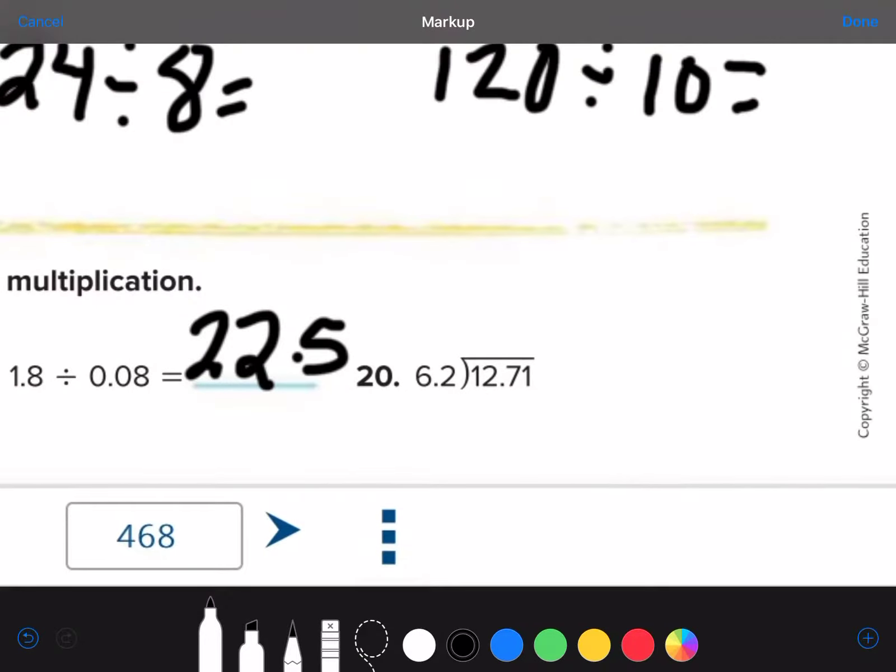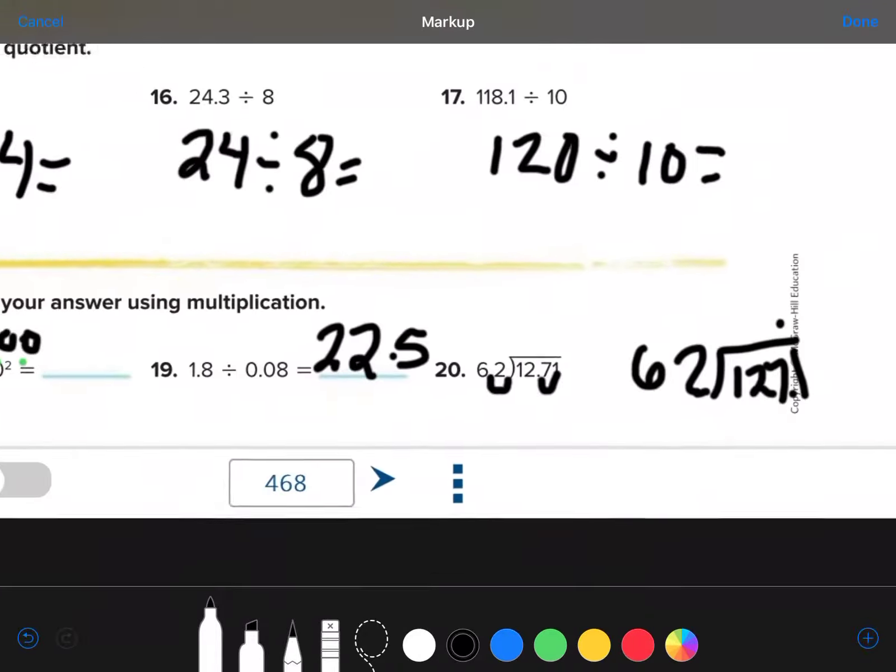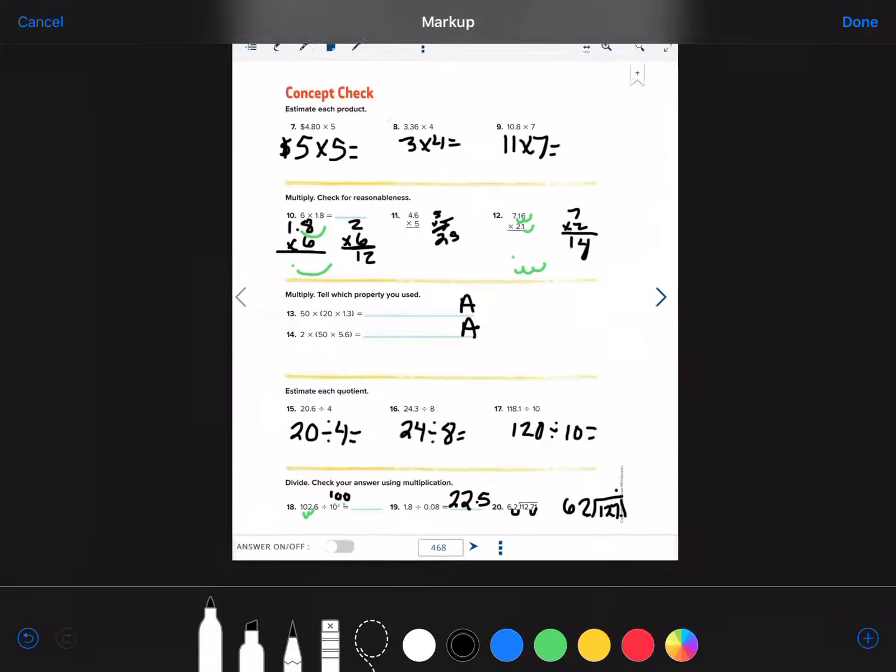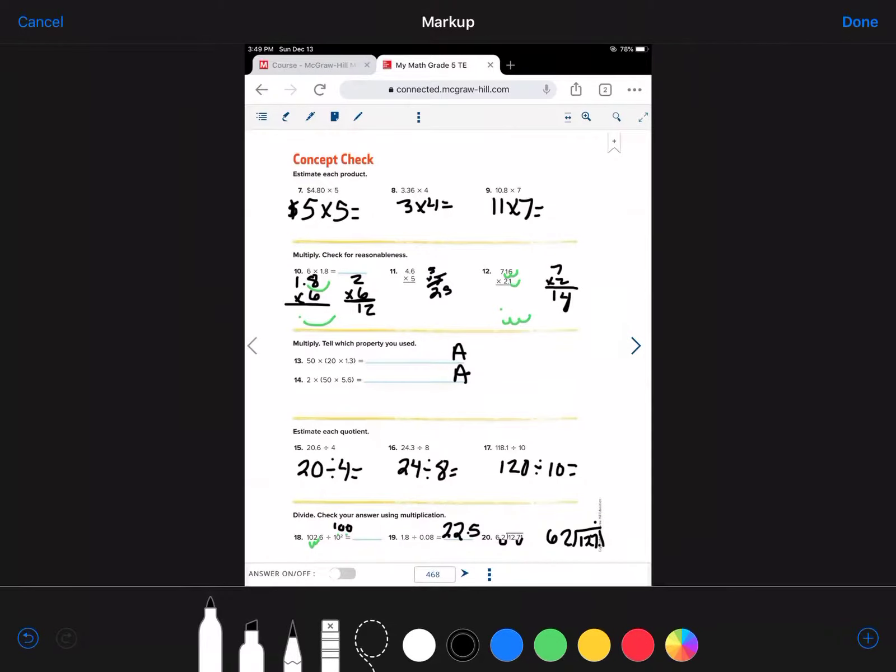Okay. Number 20. We have this number right here. 6.2 division bar 12.71. So, now remember, you need to move that decimal point over 1 and that decimal point over 1. So, you're really going to do 62 division bar 127.1. Now, you can figure that out without having that really crazy division bar. Make sure to put the decimal right there. Okay. There's your help for the review for this page.